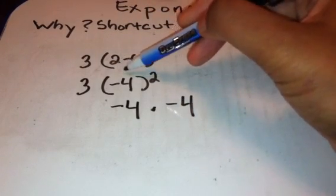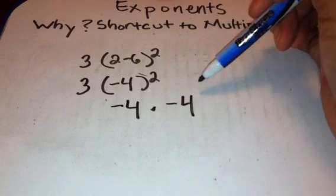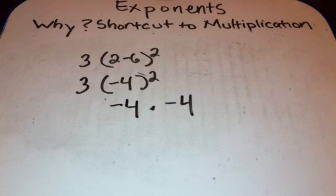Then you have an exponent with an operation on the outside. So you might be asking yourself where to start. Well, the order of operations says to start with parenthesis and brackets.